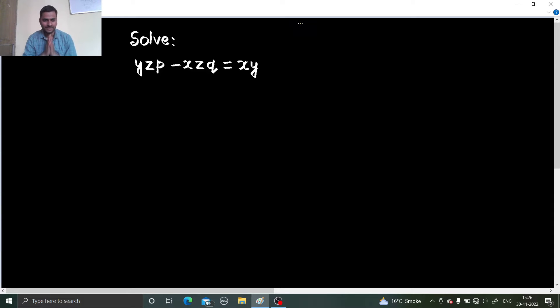Hello everyone, Namaskar. Raj Krishna this side and today we are going to solve one more problem from partial differential equation. If you see carefully the degree of P and Q are 1, so we can move ahead with Lagrange's method because this is of the form PP plus QQ equals to R.